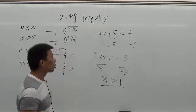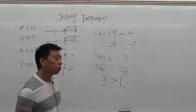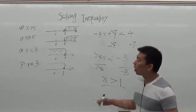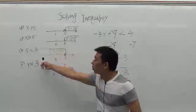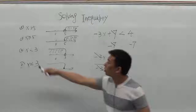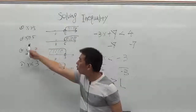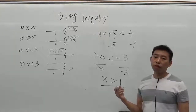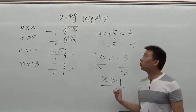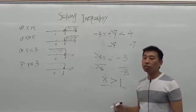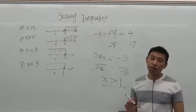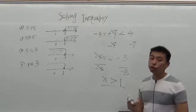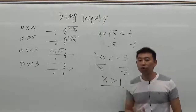So that's how to solve inequalities. In this video, we learned that there are four possibilities for inequality signs: greater than, greater than or equal to, less than, and less than or equal to. All the steps for solving inequalities are very similar to solving equations. The only difference is that when you multiply or divide by a negative number, you need to change the inequality sign.